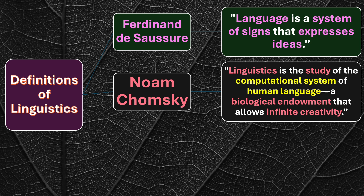The second point is biological endowment. Not only is language a system of coding and decoding, but one must also be enriched with biological ability — a biological capability inherent in individuals — which allows, permits, and provides you the means to express your ideas in an infinite manner.